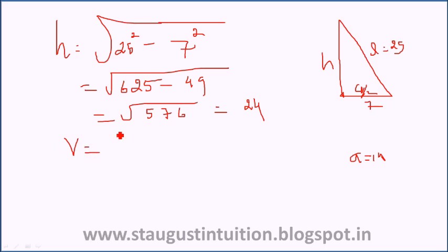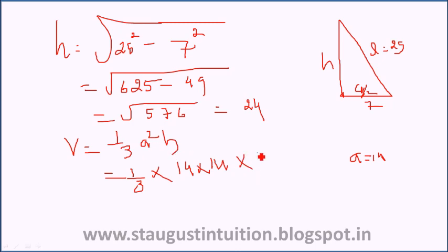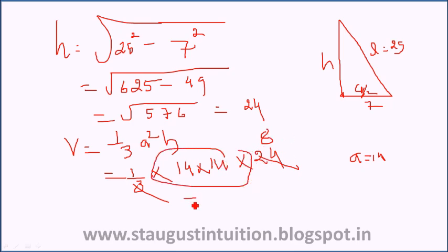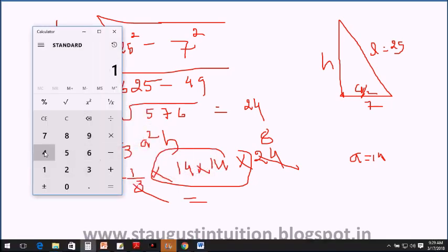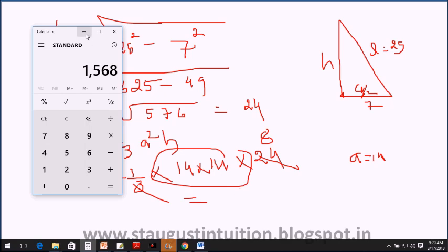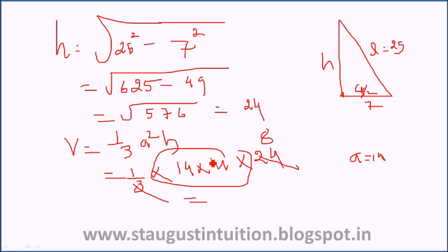Now we calculate the volume. Volume equals one-third a squared h. Substituting: one-third times 14 squared times 24. That is one-third times 196 times 24. This gives us 196 times 8, which equals 1568 cubic centimeters.